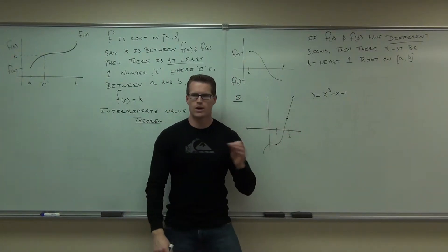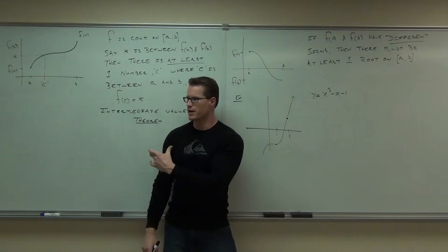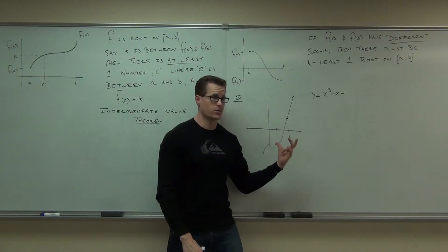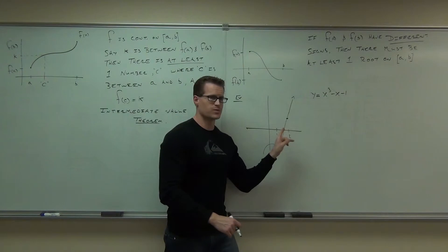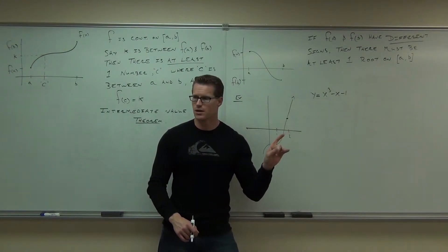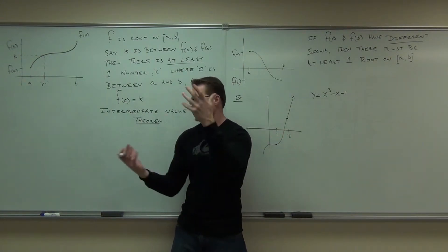That means that somewhere between 1 and 2, according to the intermediate value theorem as used for approximating roots, I know that I'm going to have some number that gives me a 0 there. Does that make sense to you? I know it's going to be within that range because all my signs are different.